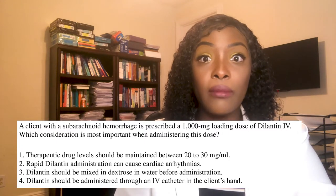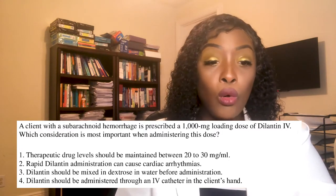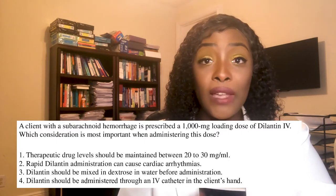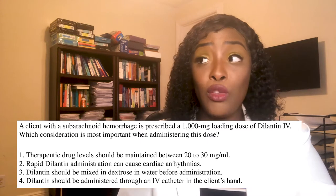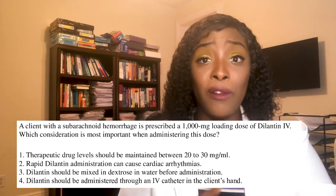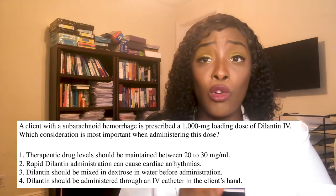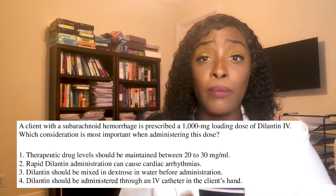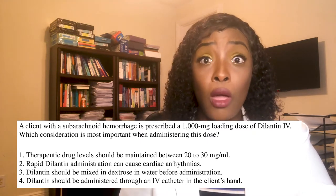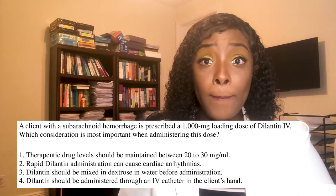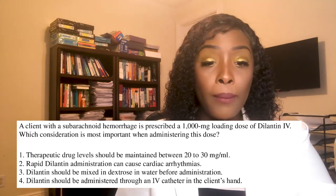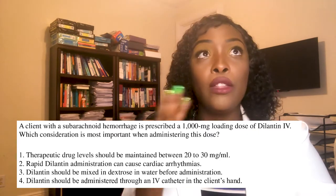The correct answer is two: rapid administration of Dilantin can cause cardiac arrhythmias. Anything more than 50 milligrams — you don't want to give it rapidly. If it's ordered at more than 50 milligrams, you're going to give it especially slow.